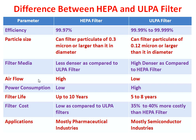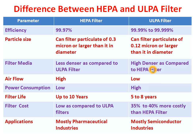Now for air flow: the air flow through the HEPA filter is high, whereas air flow through the ULPA filter is low. The reason is that the ULPA filter has high-density filter media, and with high-density media there is more pressure drop across the filter.